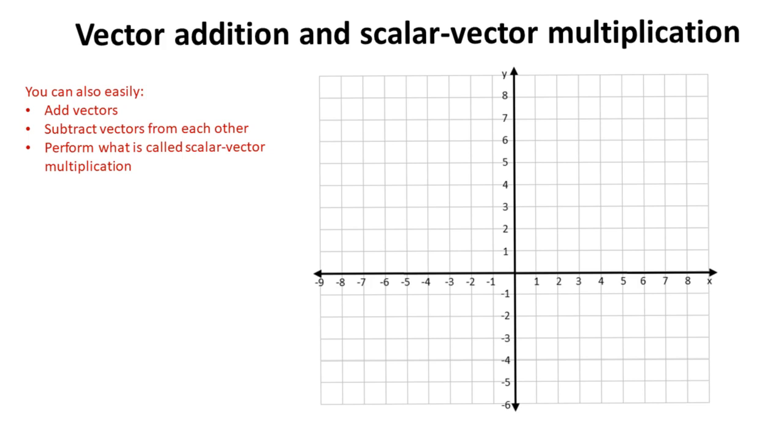You can easily also add vectors together, subtract vectors from each other, and perform what is called scalar-vector multiplication. And you have to be able to do all three of these actions under exam conditions. So let's look at some examples of how to do each now.